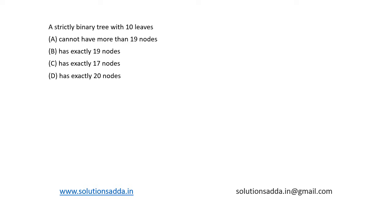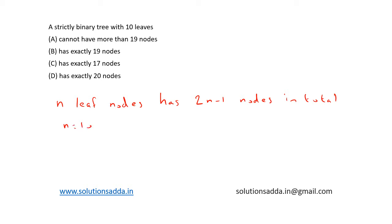The basic concept is that a strict binary tree with n leaf nodes has 2n−1 nodes in total. Here n is equal to 10, so we can write 2×10−1 = 19 nodes in total. So the correct answer is option B: 19 nodes.